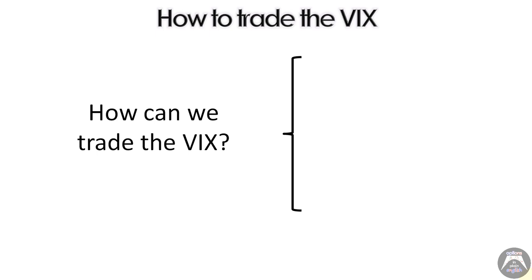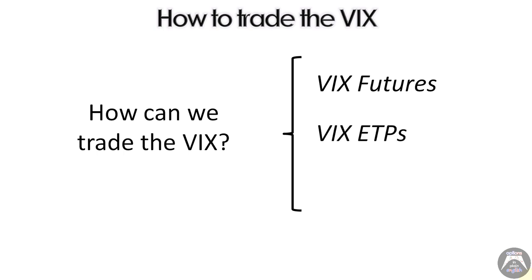We're going to look at futures, ETPs, and options. By using these instruments, we're going to be able to trade the VIX, even though we're not able to actually buy or sell the VIX directly. Volatility usually moves in an inverse direction to the underlying — if SPX is going higher, usually the VIX is going lower, and vice versa — but it's not always the case.